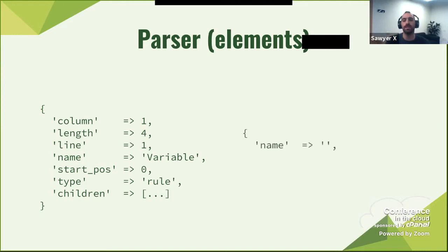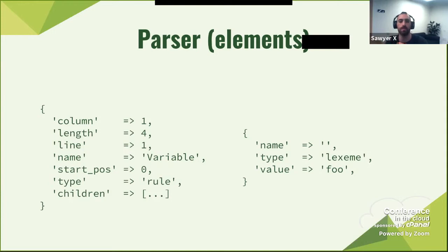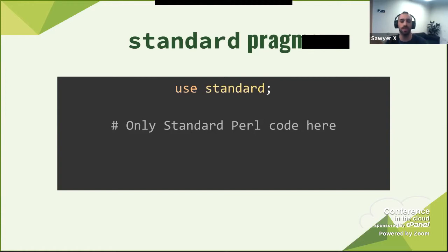The 'use standard' pragma is also on CPAN. If you turn on 'use standard', it basically grabs all the code, runs it through the parser, and tells you if there's a mistake. Here's an example: 'MyClass->new' is not supported under standard Perl. But if you try to use the Perl interpreter with it and we use B::Deparse to check it, what it does is tell you: this is 'class', and then there's a string 'class' calling new — this is what it understands.